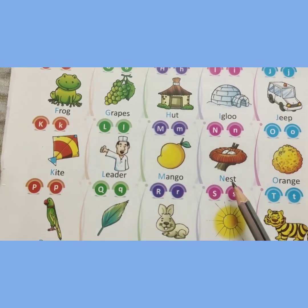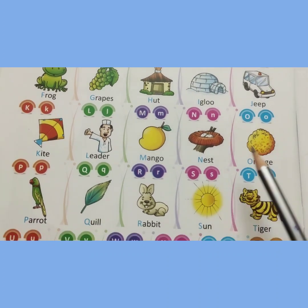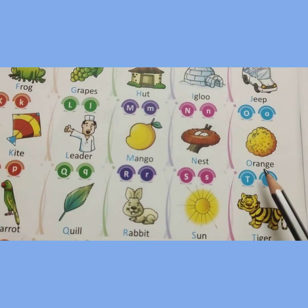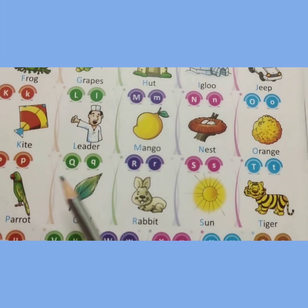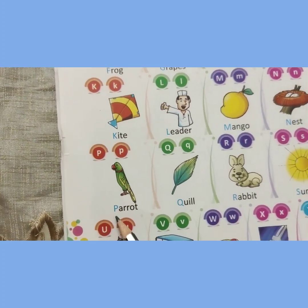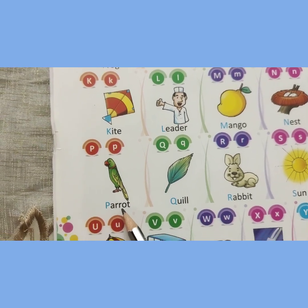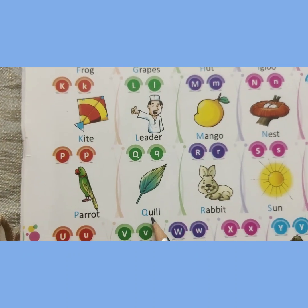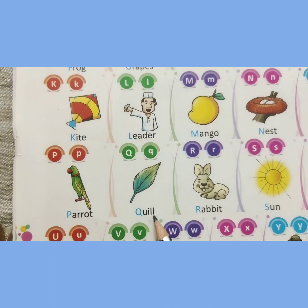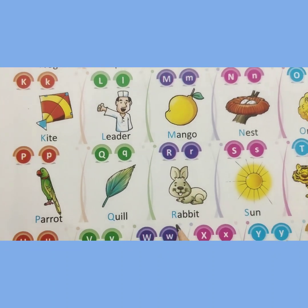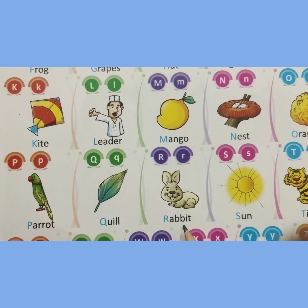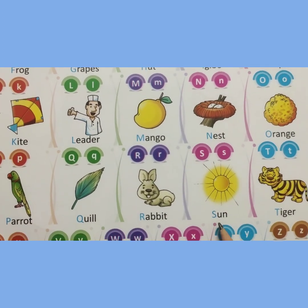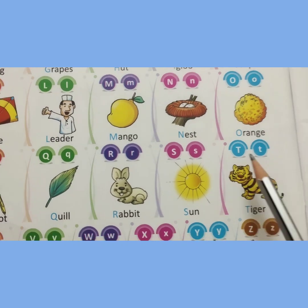N for nest. N, E, S, T. Nest. O for orange. O, R, A, N, G, E. Orange. P for parrot. P, A, R, R, O, T. Parrot. Q for quill. Q, U, I, L, L. Quill. R for rabbit. R, A, B, B, I, T. Rabbit. S for sun. S, U, N. Sun.